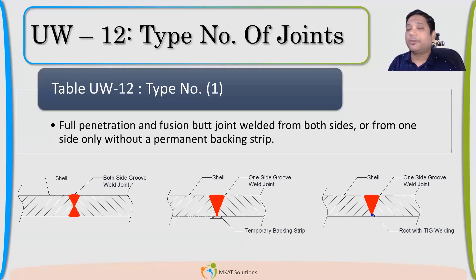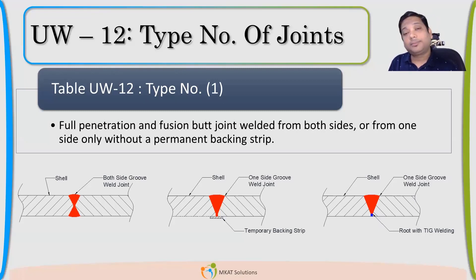So Type 1 is clear — this is the weld you should normally have if you are specifying joint efficiency as 1. One of the three sub-types has to be considered.